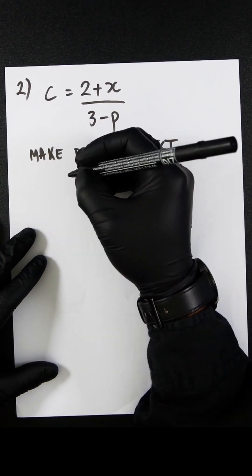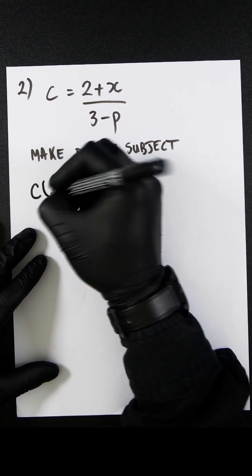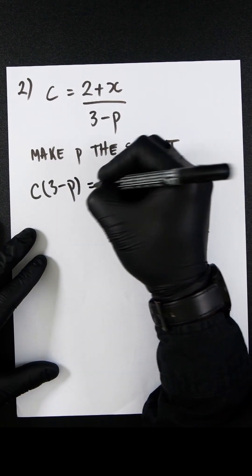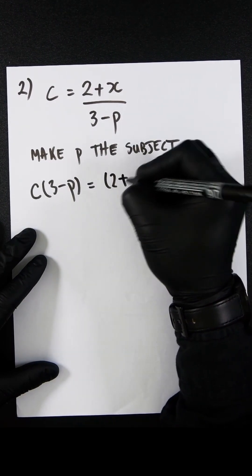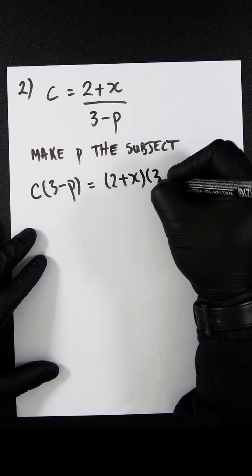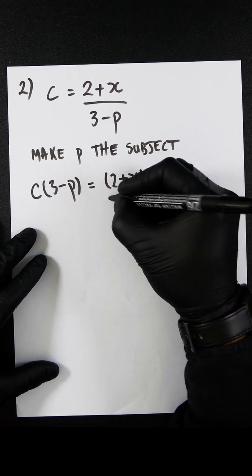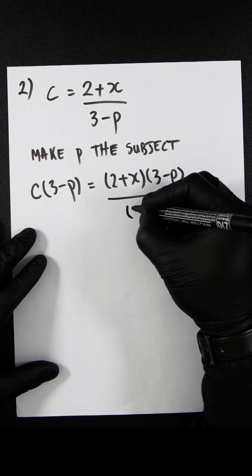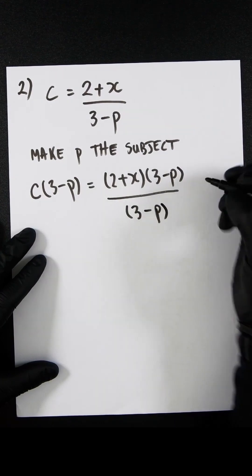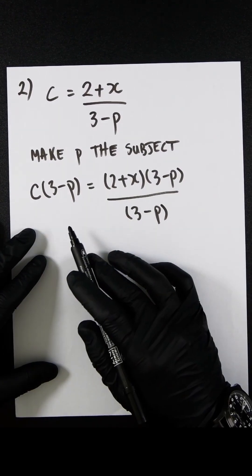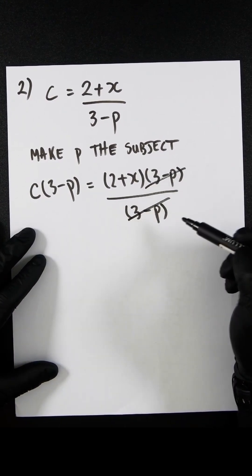I'm going to put everything in brackets so it's a bit easier. So we have C times (3 minus p) equals (2 plus x) times (3 minus p) over (3 minus p). As we've multiplied both sides by 3 minus p, you can see that these will cancel out.